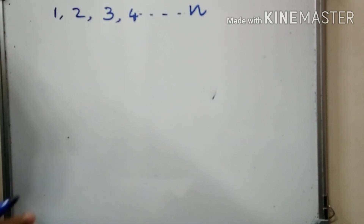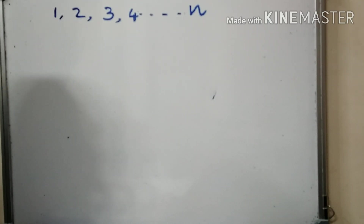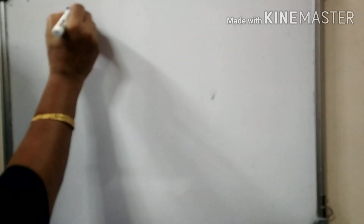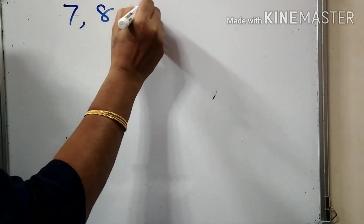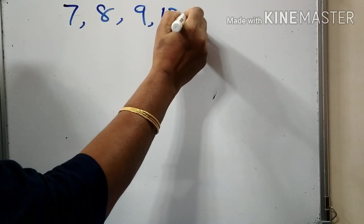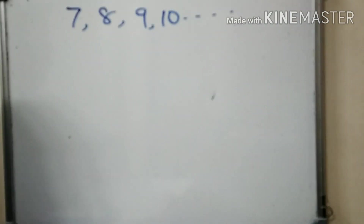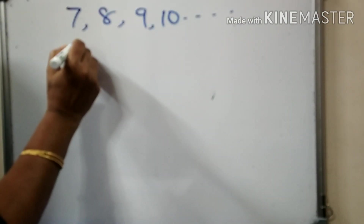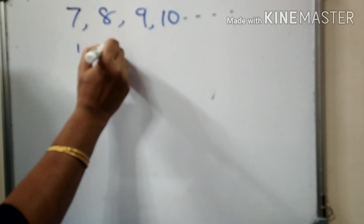If we write it, we will write it. Now: 7, 8, 9, 10, etc. This is the sequence — natural numbers. We have to write it in algebraic form.